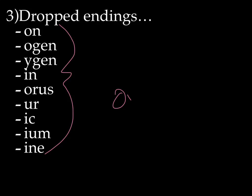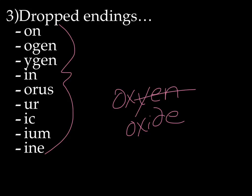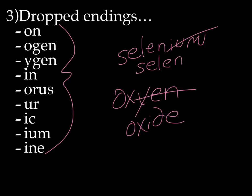Here's a list of the dropped endings — you might want to write these down, though it's not something you really need to memorize; it's pretty obvious. For example, if we had oxygen, we're going to drop the '-ygen' and it'll be oxide. If we have selenium, we're going to drop the '-ium' and it's going to be selenide, and so forth.